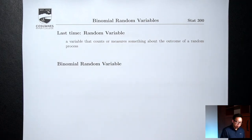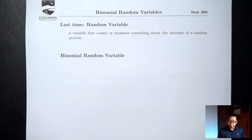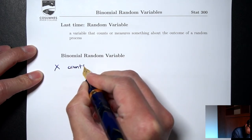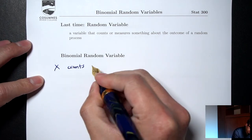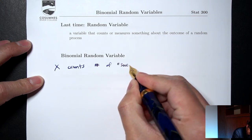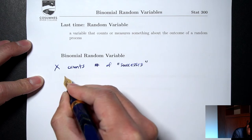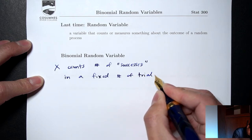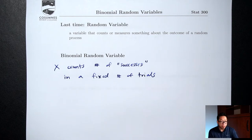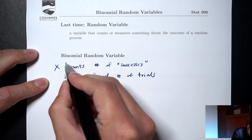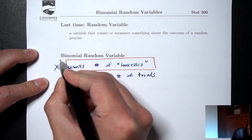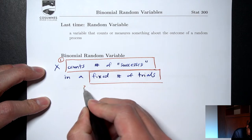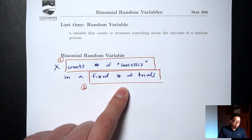Today we're going to talk about a very special type of random variable called a binomial random variable. It's special in the sense that it's going to count something very specific. Binomial random variables count the number of successes in a fixed number of trials. The two important things here are: first, what it's counting — the number of successes — and second, a fixed number of trials, meaning whatever random process we're talking about, we're doing it a fixed number of times.